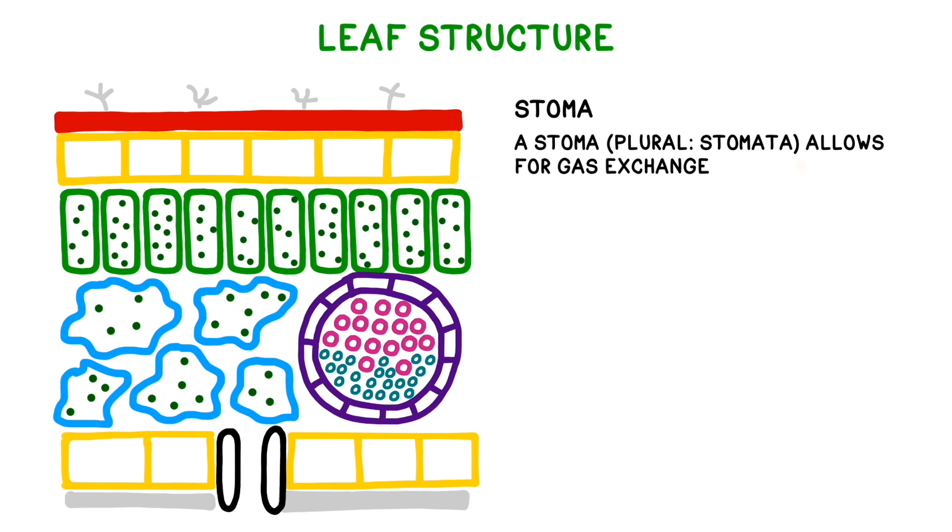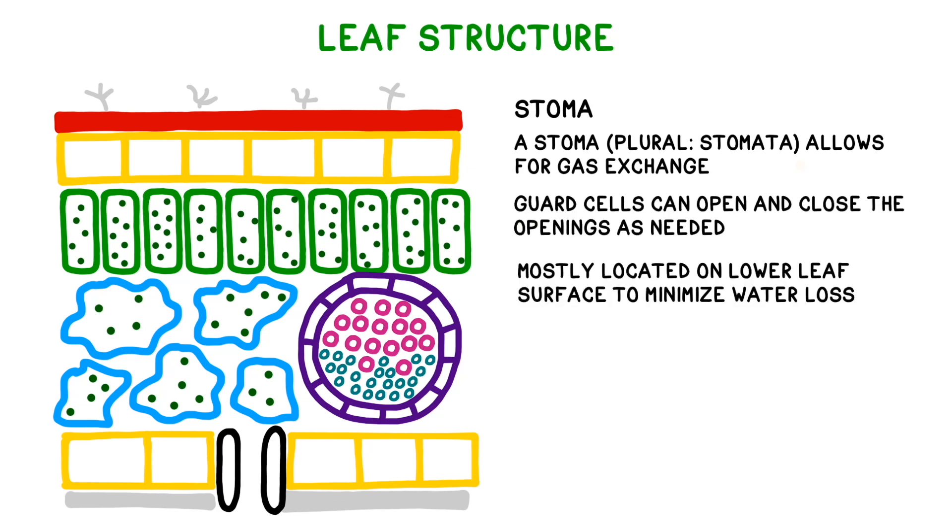Each stoma has two guard cells, one on either side, which can open and close in response to the environment. If it's very hot, the plant will likely keep its stomata closed in order to minimize water loss via transpiration. Most of the stomata are located on the lower surface of the leaf rather than the upper.